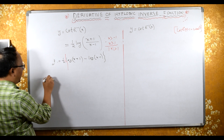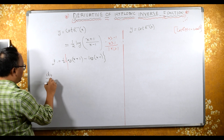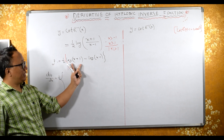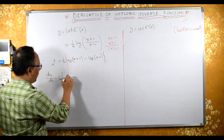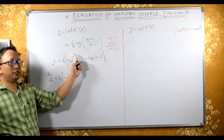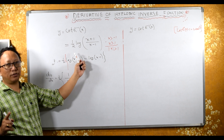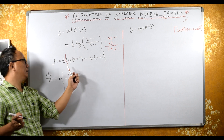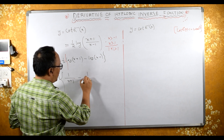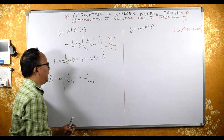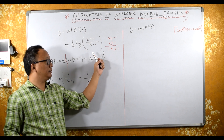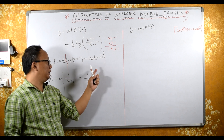Now differentiating with respect to x: dy/dx equals half — half is constant, sending outside. Since log is there, differentiation gives 1 upon x plus 1 times dy/dx of x plus 1, which is 1. Minus: differentiation of log gives 1 upon x minus 1, and dy/dx of x minus 1 is 1 minus 0, which equals 1.